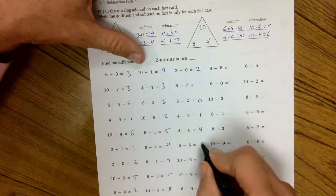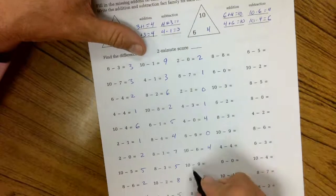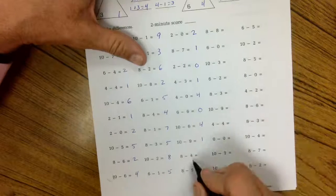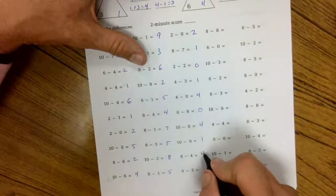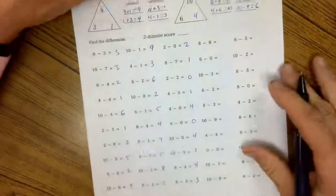6 minus 6 is 0. 10 minus 6 is 4. 6 minus 9 is 1. 8 minus 4 is 4. 8 minus 5 is 3.